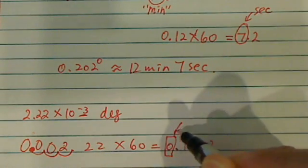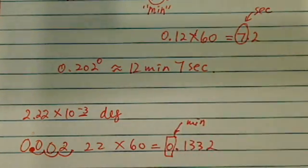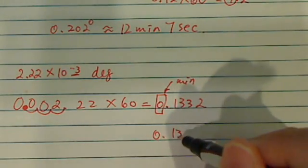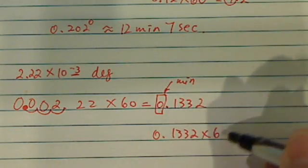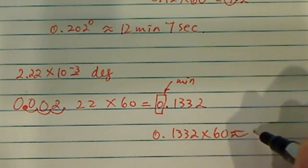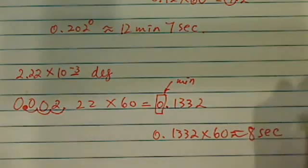So I still have 0 minutes. Let's do 0.1332 times 60. Again, this one I have 7.99, so I'm going to round up to 8 seconds.